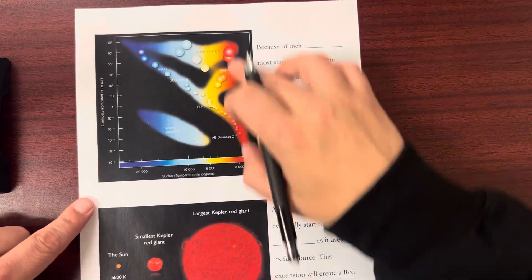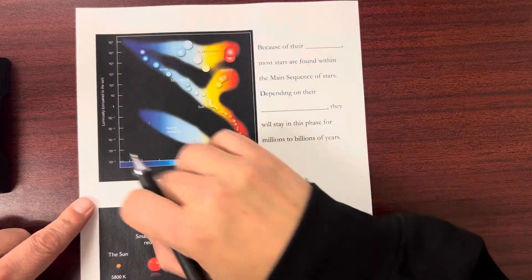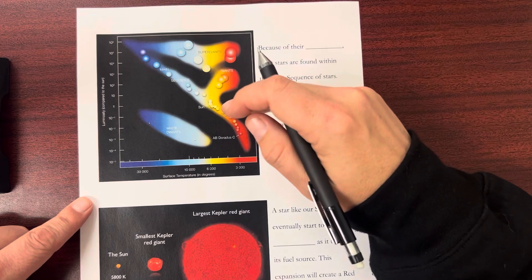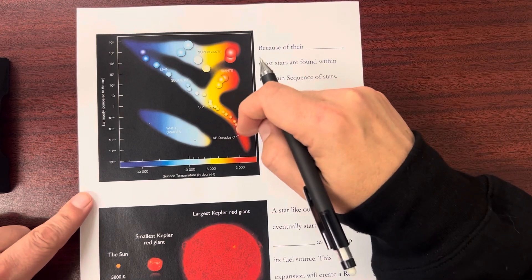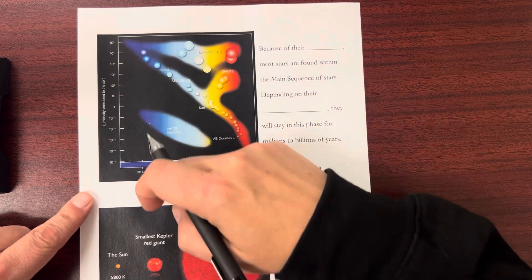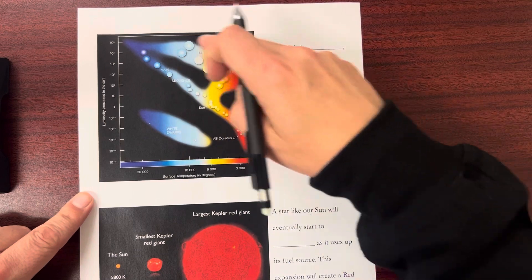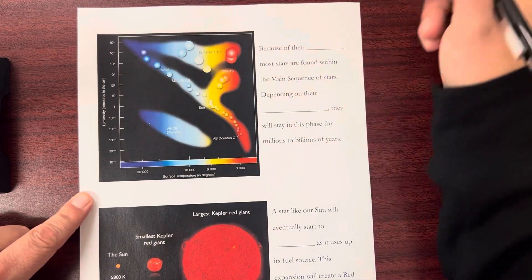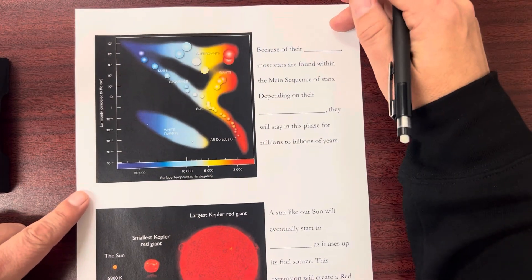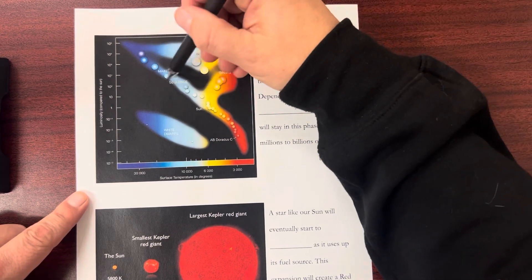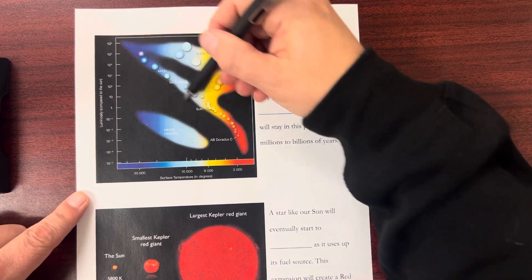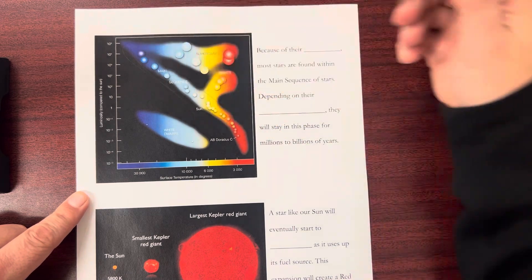This is a diagram commonly used in astronomy called an HR diagram. It shows the different types of stars, different temperatures, different sizes and luminosities. Most of the stars are along this main sequence right through here.